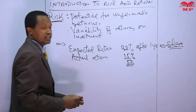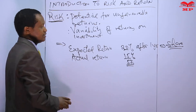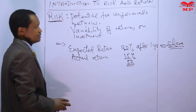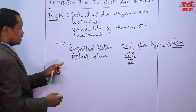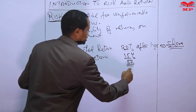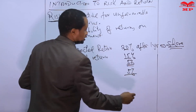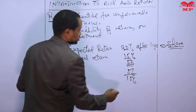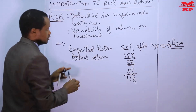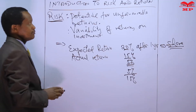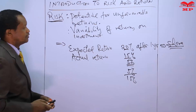So that would mean such an investment is a risky investment. But if you were to earn say 5 percent instead of 20 percent, then you see there is a variation of 15 percent. That would mean that share is more risky than the first one. So risk is the potential for unfavorable returns.